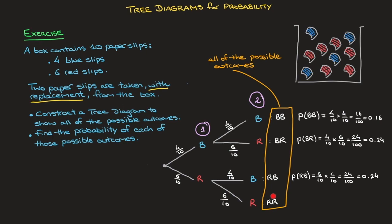Finally, the probability of picking red followed by red — starting from the tree diagram, we go red followed by red. The probabilities encountered are 6 over 10 and 6 over 10. So the probability of red followed by red equals 6 over 10 times 6 over 10, which equals 36 over 100, written as a decimal as 0.36.